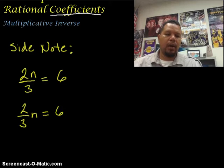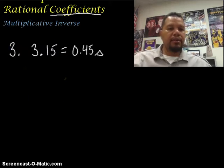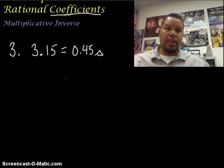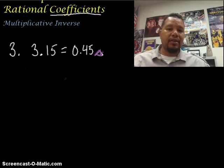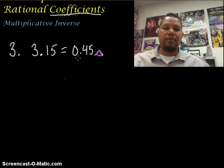Now to our next example. In this example, we don't have fractions, but rather we have decimals, because decimals are also rational numbers. And so our coefficient in this case is on the right-hand side because our variable is an s right here. I do a little curve of s because my s's sometimes look like 5s. So I have 3.15 equals 0.45 times s. Because this is my coefficient over here, I want to isolate my variable.